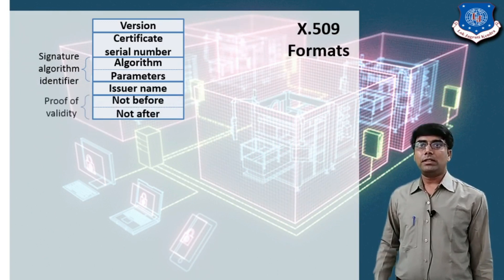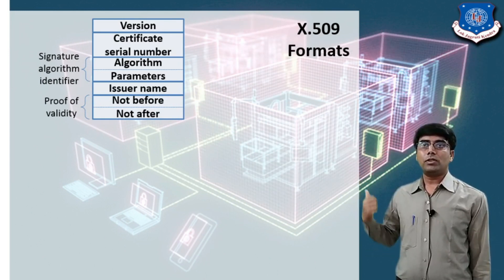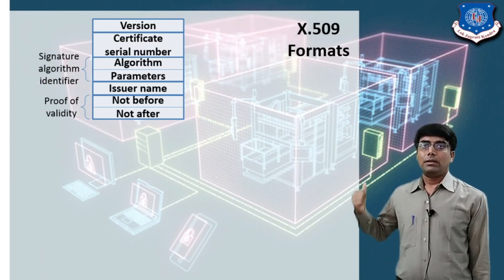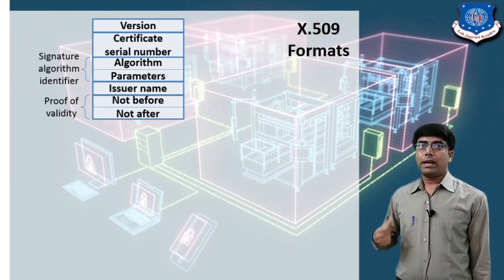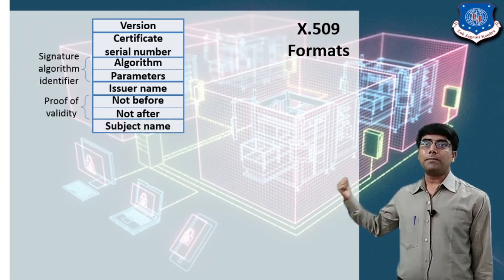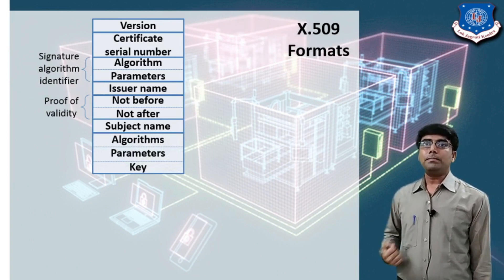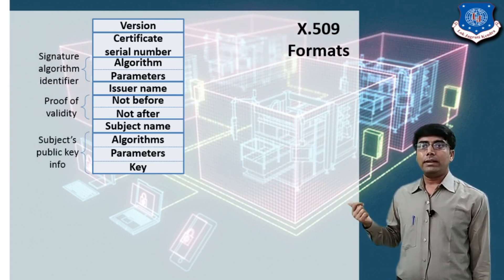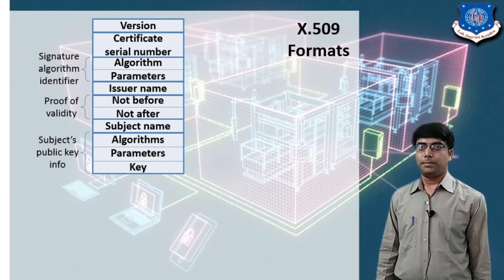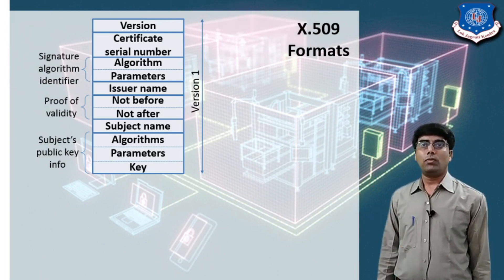Next are the 'not before' and 'not after' fields, together called the period of validity. They consist of two dates — the first and the last — indicating from which date the certificate is valid and on which date it expires. Next is the subject name, which refers to the username. Then comes the subject public key information, where we provide the user's public key along with their identity to the certificate authority. These fields together constitute version 1.